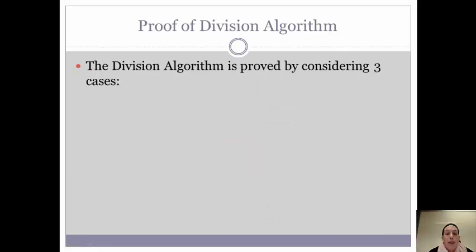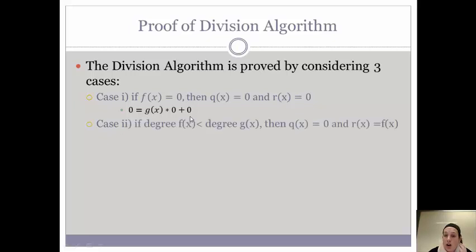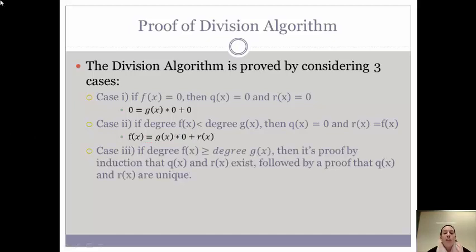The proof of the division algorithm is a little bit tricky and is proved by considering three cases. In case one, if F of X equals zero and G of X does not equal zero, then Q of X equals zero and R of X equals zero. In case two, if the degree of F of X is less than the degree of G of X, then Q of X equals zero and R of X equals F of X. The third case — if the degree of F of X is greater than the degree of G of X, like the example we just saw — you must prove by induction that Q of X and R of X actually exist, and then prove that Q of X and R of X are unique.